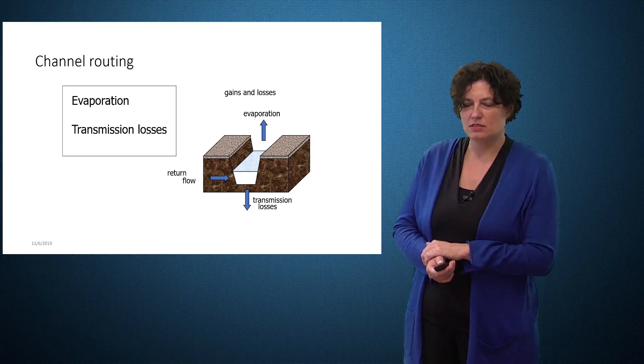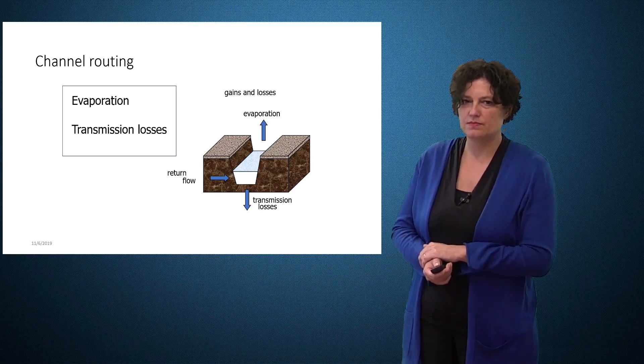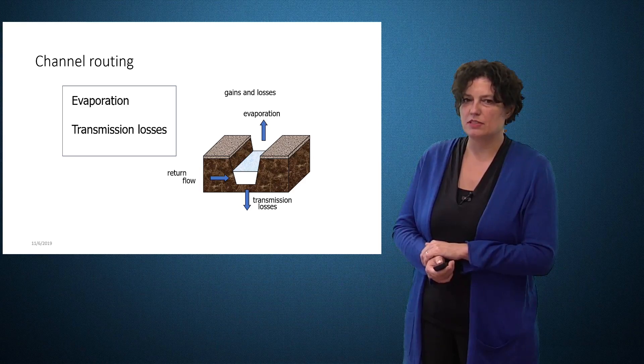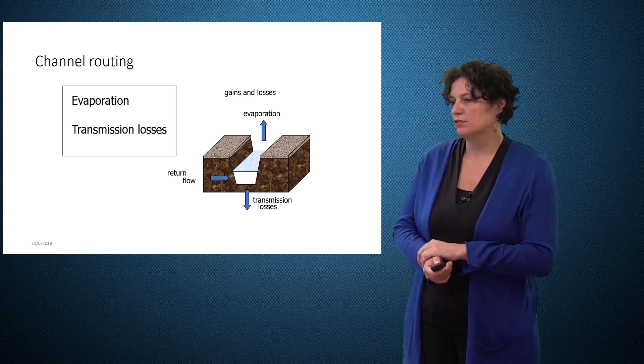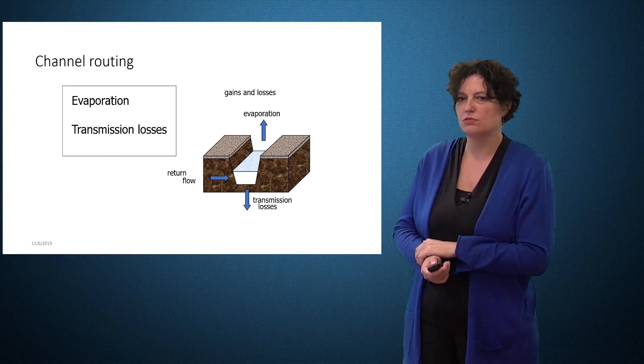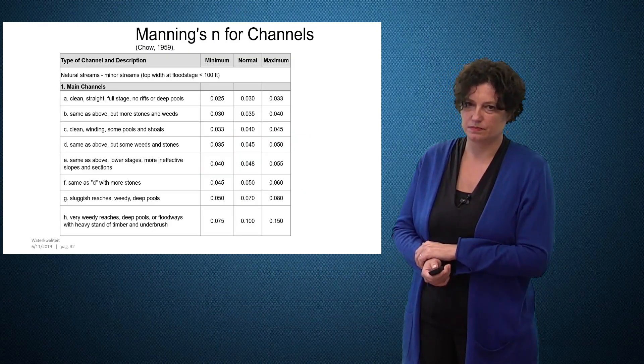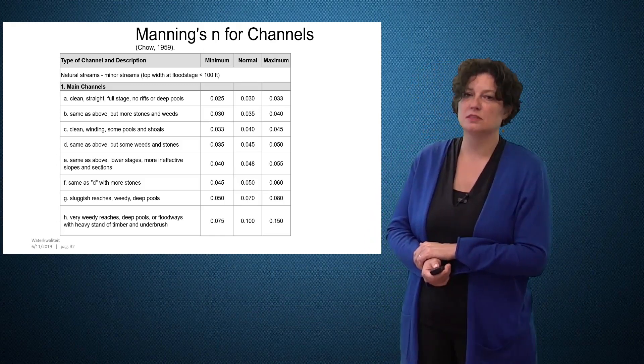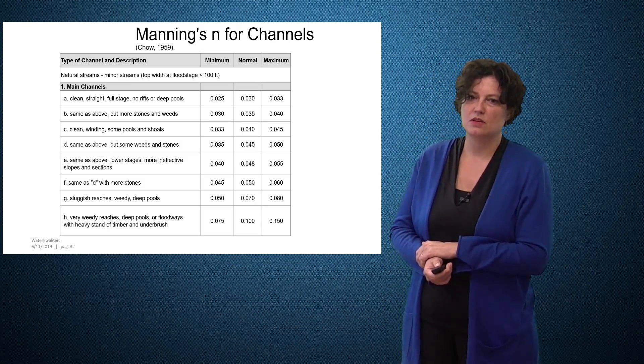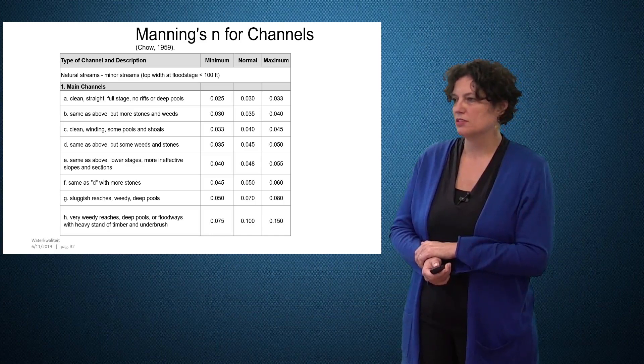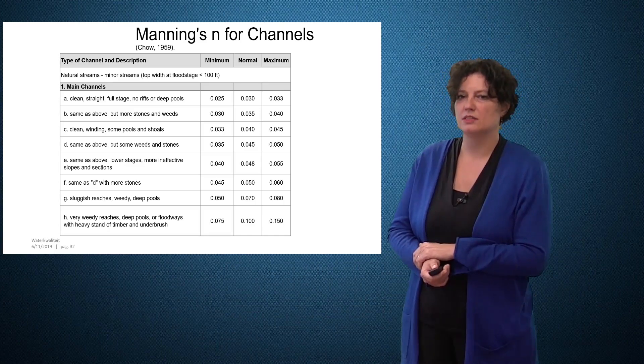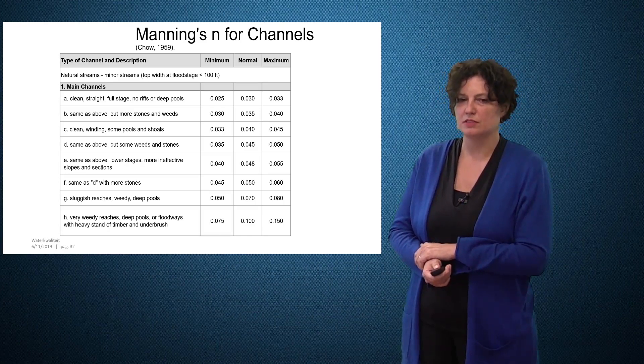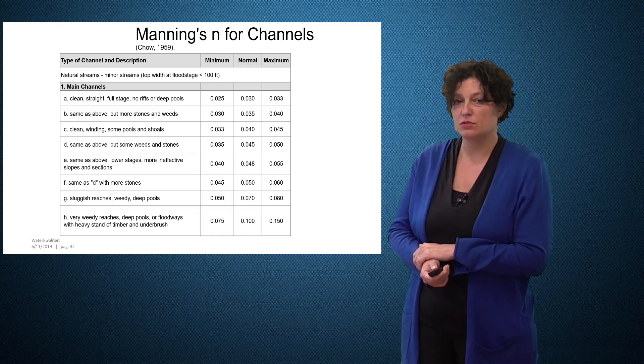Besides that, there are losses such as evaporation and transmission losses. The transmission losses refer to the percolation of the water through the riverbed. An important parameter in channel processes is the Manning coefficient. For this it's also important that you check whether you have a realistic value for the Manning coefficient. You can refer to literature.